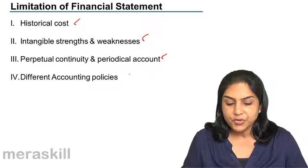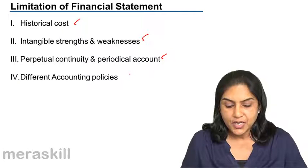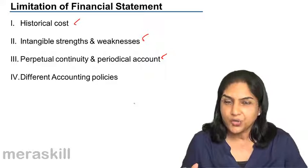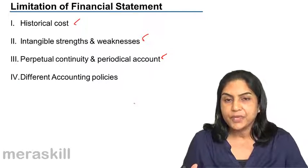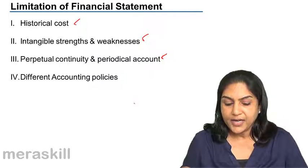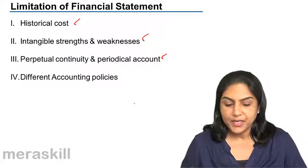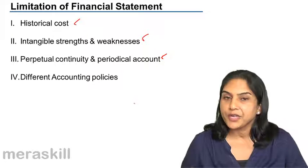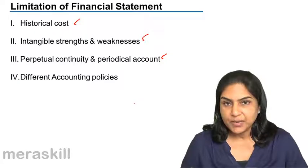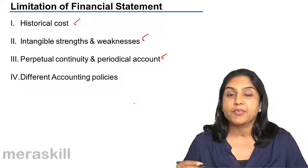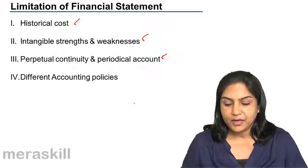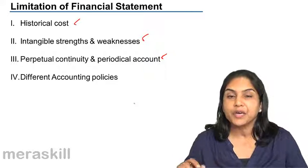Another disadvantage would be different accounting policies. Valuation of fixed assets, valuation of inventories, valuation of investments, etc., can be done in different ways. For example, in depreciation, the straight line method of computing depreciation may be followed, or a written down value method, or an annuity method, or the number of hours of production method, etc. Different organizations may have different accounting policies.